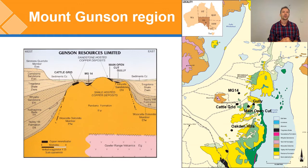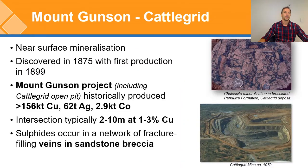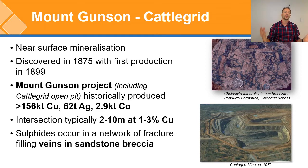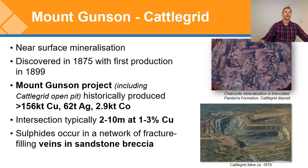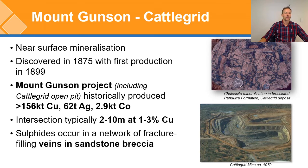Mining has occurred at several of these deposits. Mount Gunson is typically used to refer to several deposits shown in that map. Mining has occurred over several intervals as far back as 1899, and over 156,000 tonnes of copper has been extracted, along with a significant amount of cobalt. Most recently metal has been extracted using more of a heap-leach style method. The Cattle Grid deposit has chalcocite forming the matrix of Marinoan periglacial breccias, but copper sulphides are also found in the overlying Waika Sandstone.